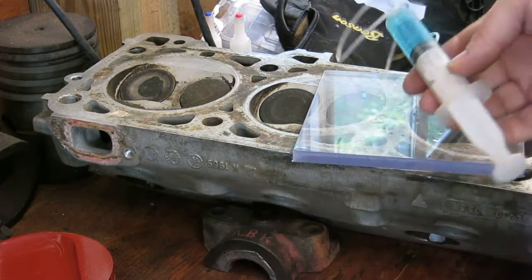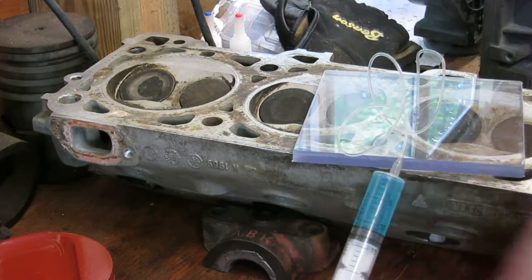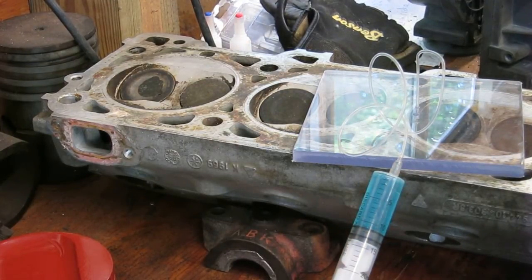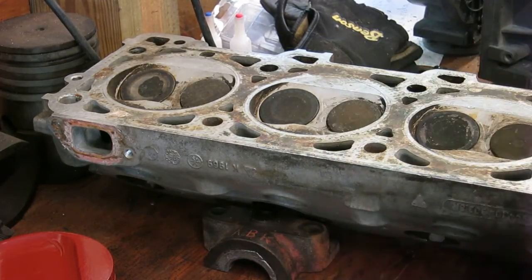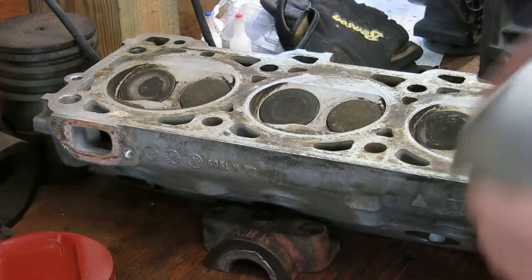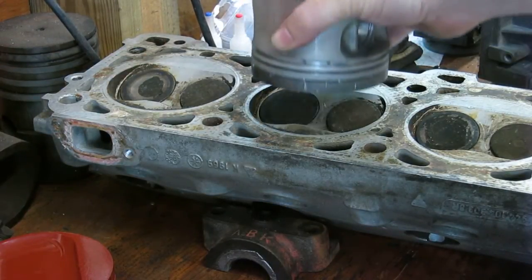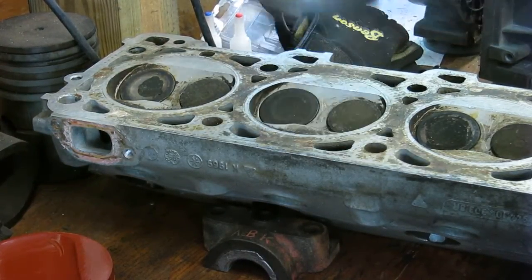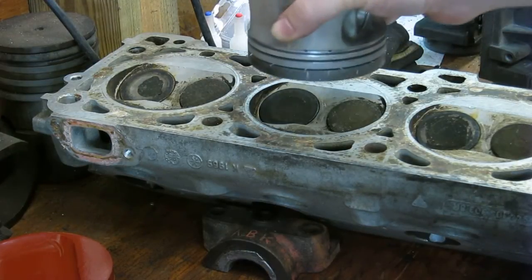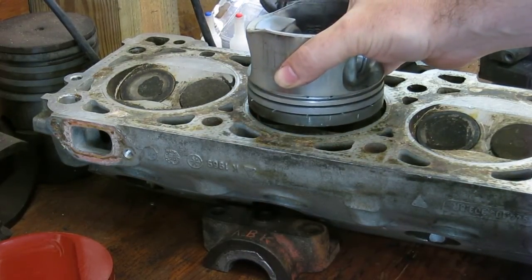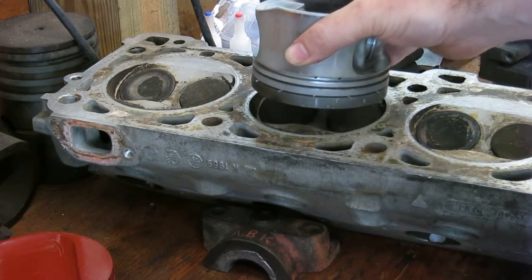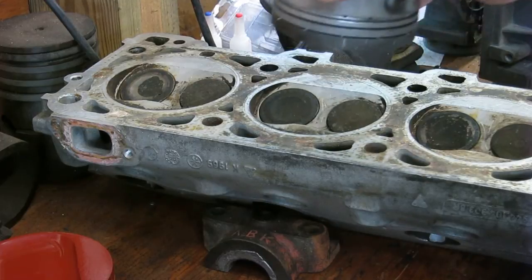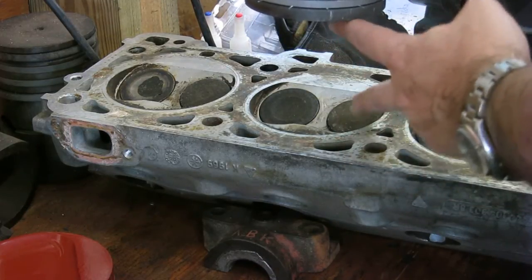And then once you know all your volumes, you can easily calculate your true static compression ratio. The way it goes, you've got the displacement, which is the bore times the stroke—that's the piston moving up and down. When the piston is all the way at top dead center, whatever space is left is the ratio between the bore times stroke plus all of these extra volumes to just all those extra volumes.